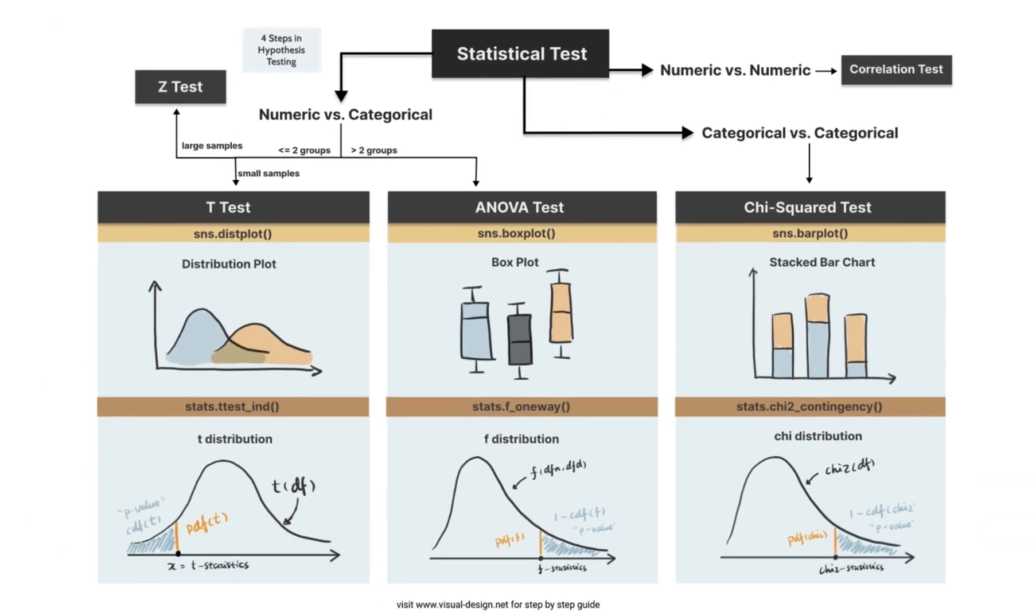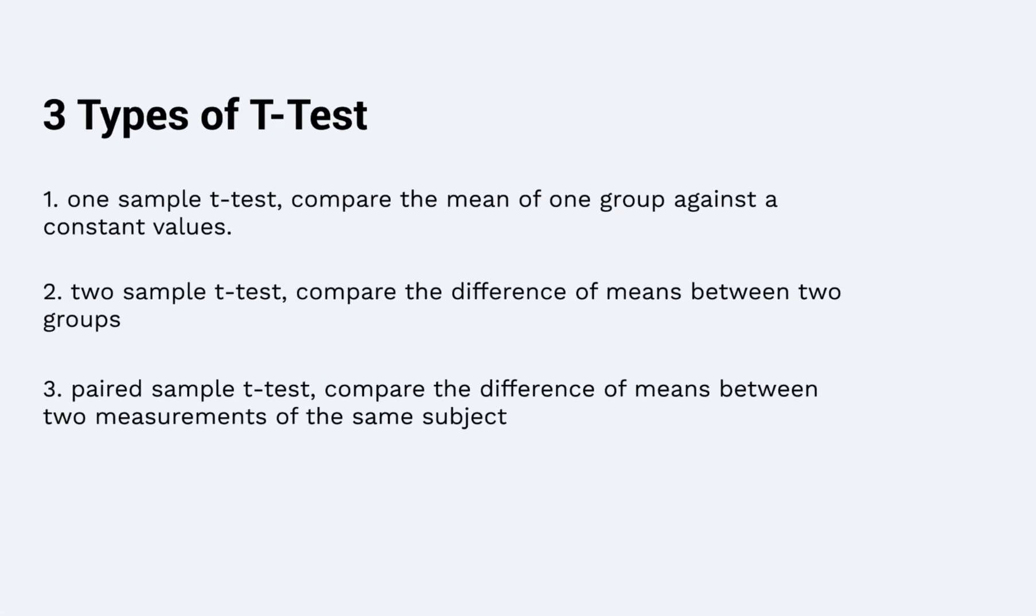Now let's dive into the details of t-test, ANOVA test, and chi-squared test. There are three common types of t-test: one sample t-test compares the mean of one group against a constant value; two sample t-test compares the difference of means between two groups.